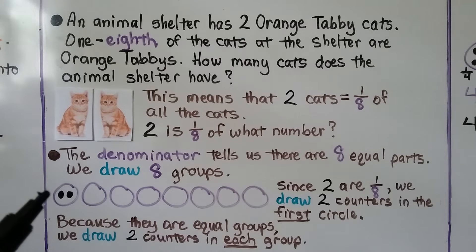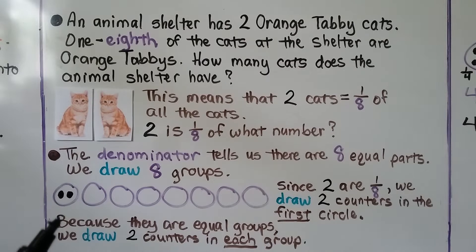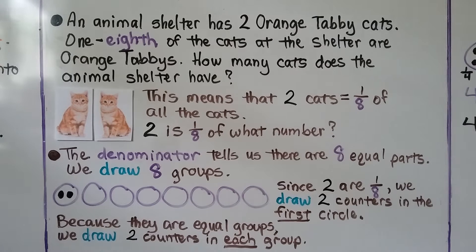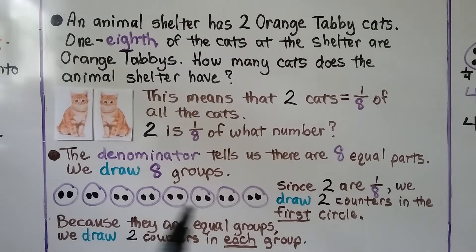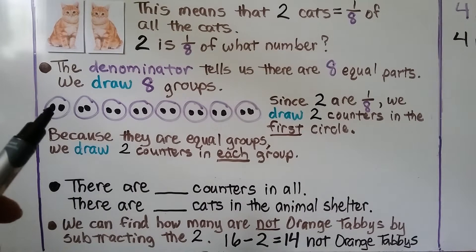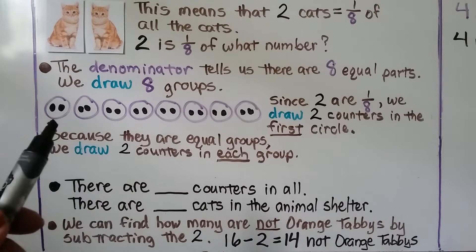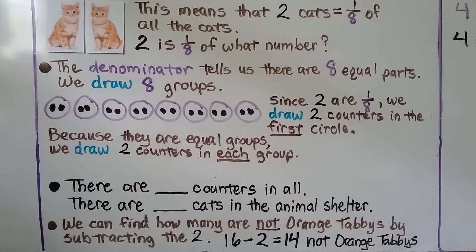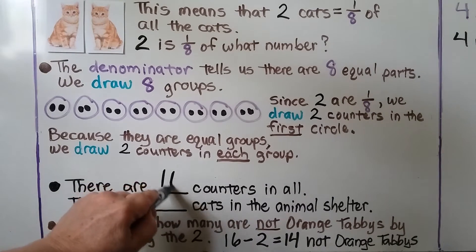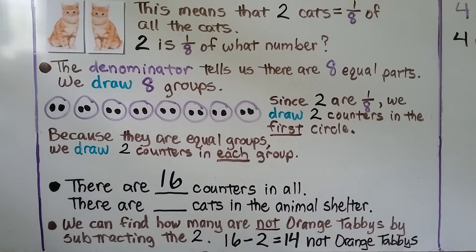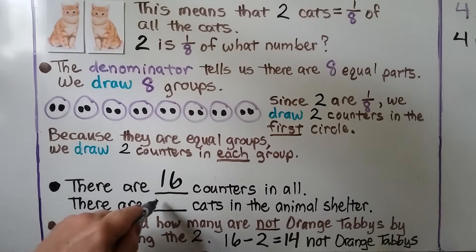Since 2 are one-eighth, we draw 2 counters in the first circle. And because they're equal groups, we draw 2 counters in each group. Now we have 2 in each group. 2 times 8 is equal to 16, so there are 16 counters in all. That means there are 16 cats in the animal shelter.